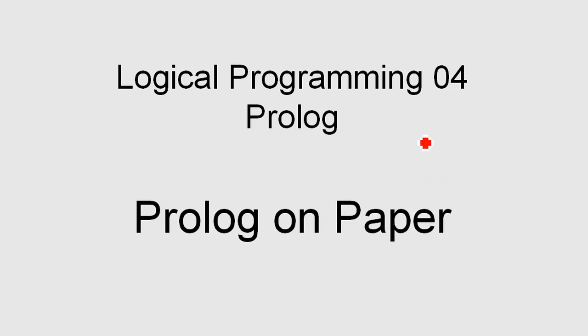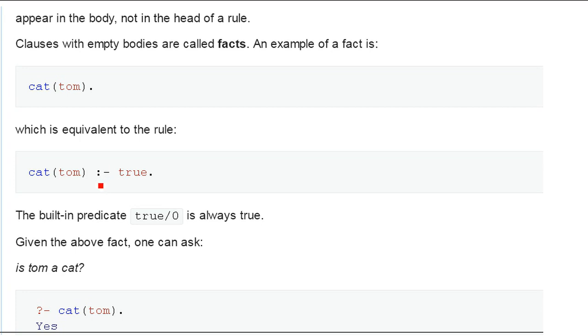For all of you who can't wait to use Prolog and wonder what is that arrow all about that I always draw? In Prolog you write it like this. Let's switch over to the Wikipedia.